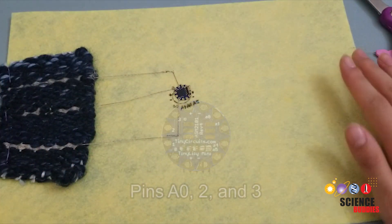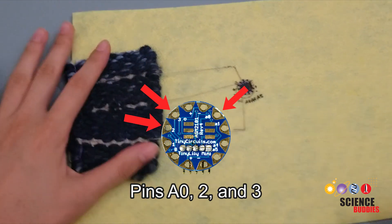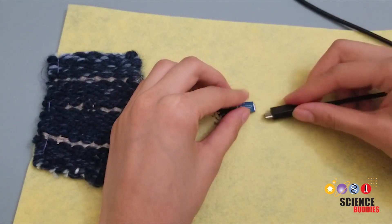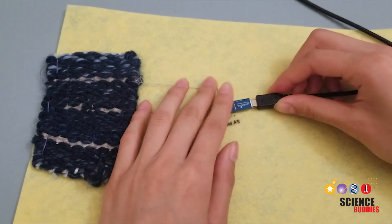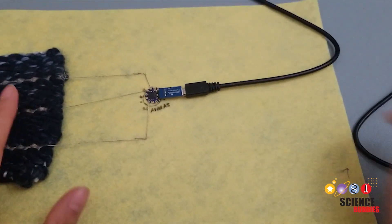You want to connect the conductive threads to pin A0, 2, and 3. Now, let's launch the Arduino IDE. Connect your Tiny Lily mini processor board to the computer using the Tiny Lily mini USB adapter and micro USB cable.